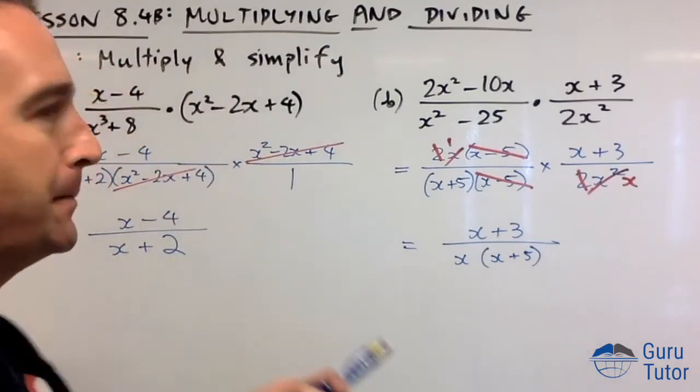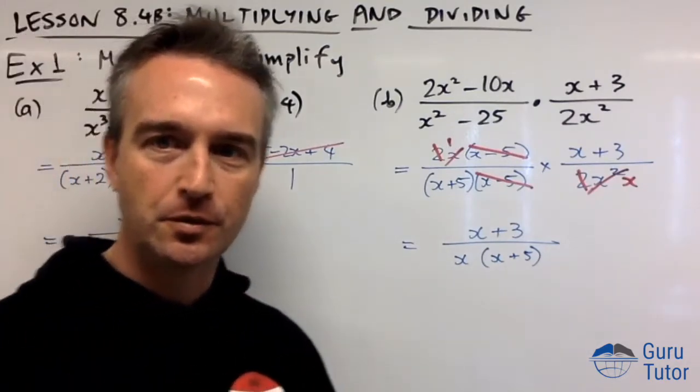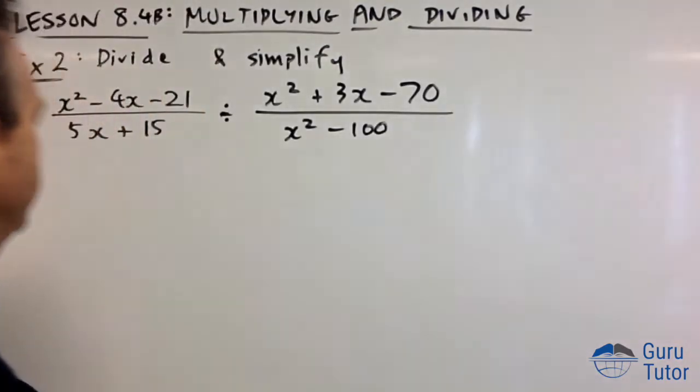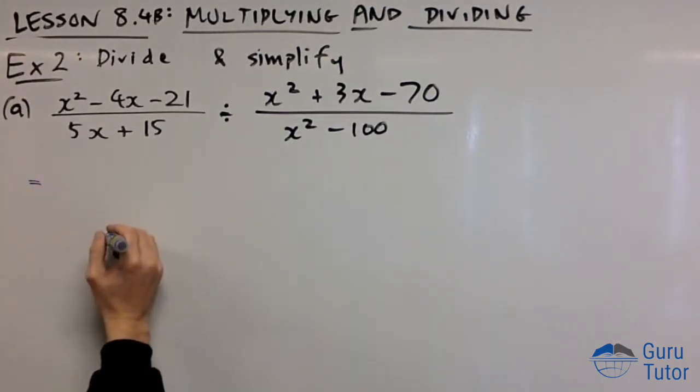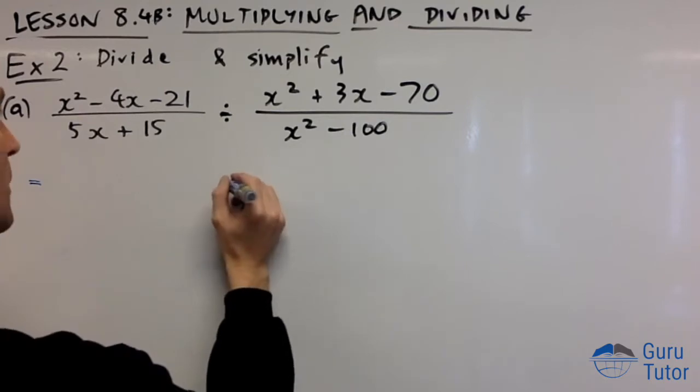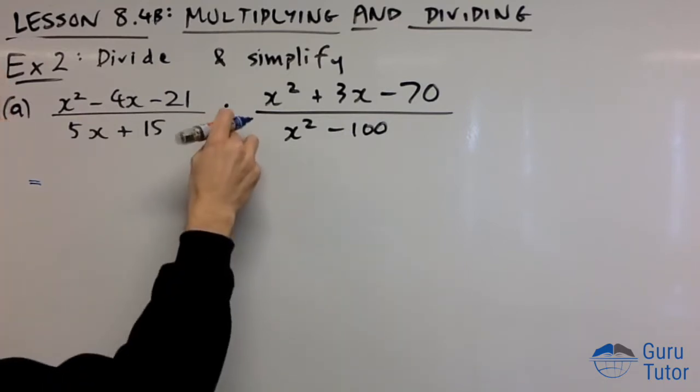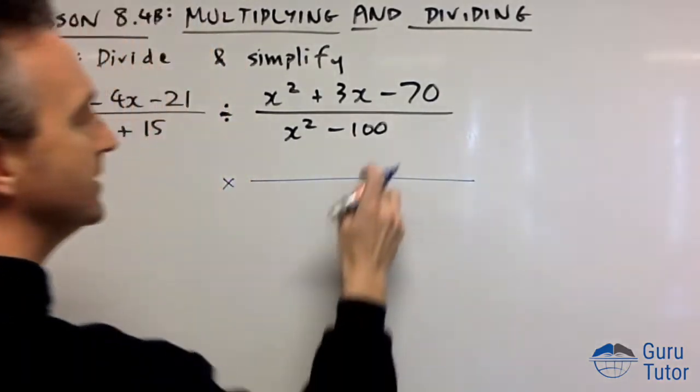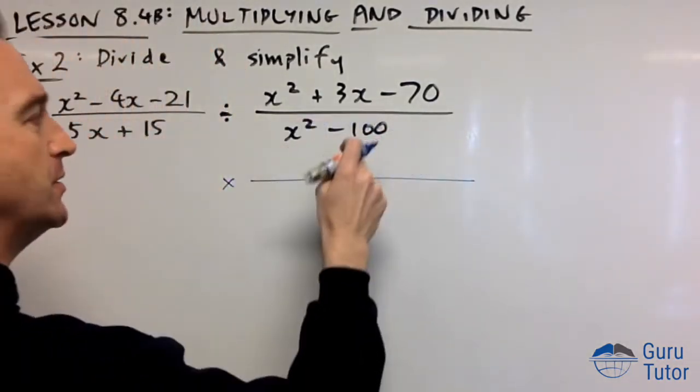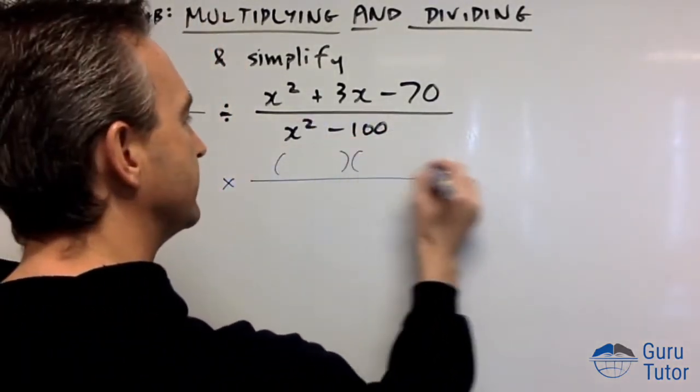Let's move on to a couple more. We're going to try division this time. How do we divide fractions? We turn the division symbol into multiplication and flip it upside down. So x²-100 goes on top, and we can factor that: (x+10)(x-10).